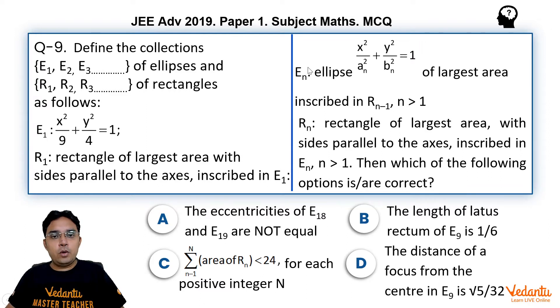This is question number 9 from paper 1. This question is taken from the topic ellipse in conic section, one very important topic for JEE Advanced. Let us see what this question is.